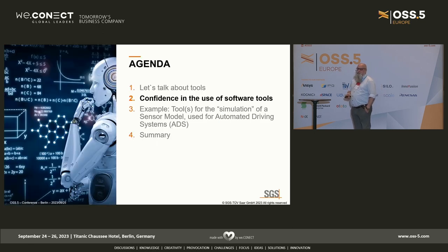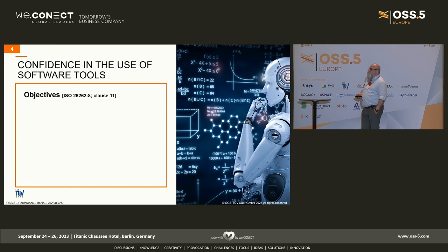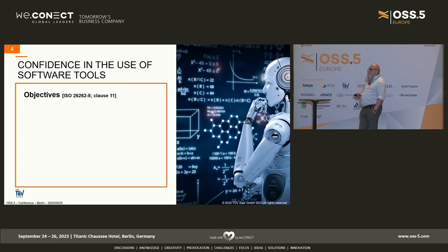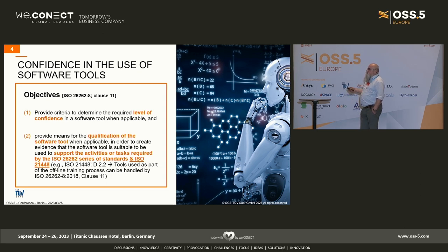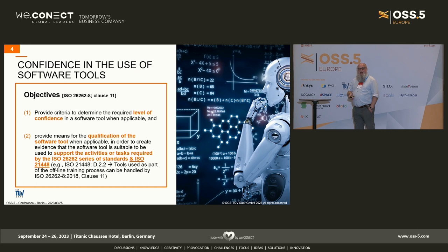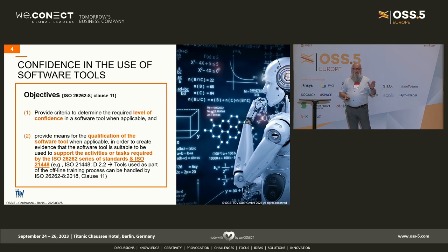How to increase the confidence in the use of software tools? For that, we have ISO 26262 Part 8, Clause 11. The objectives are: first, to provide criteria to determine the required level of confidence in the software tool when applicable, and to provide means for the qualification of the software tool when applicable, in order to create evidence that the tool is suitable to support the activities or tasks required by ISO 26262 — and of course now also ISO 21448.